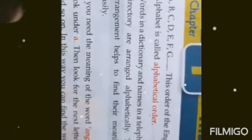For example, words in a dictionary and names in a telephone directory are arranged alphabetically. If you need the meaning of the word angry, look under A, then look for the next letter N and so on. In this way you can find the word and its meaning easily.